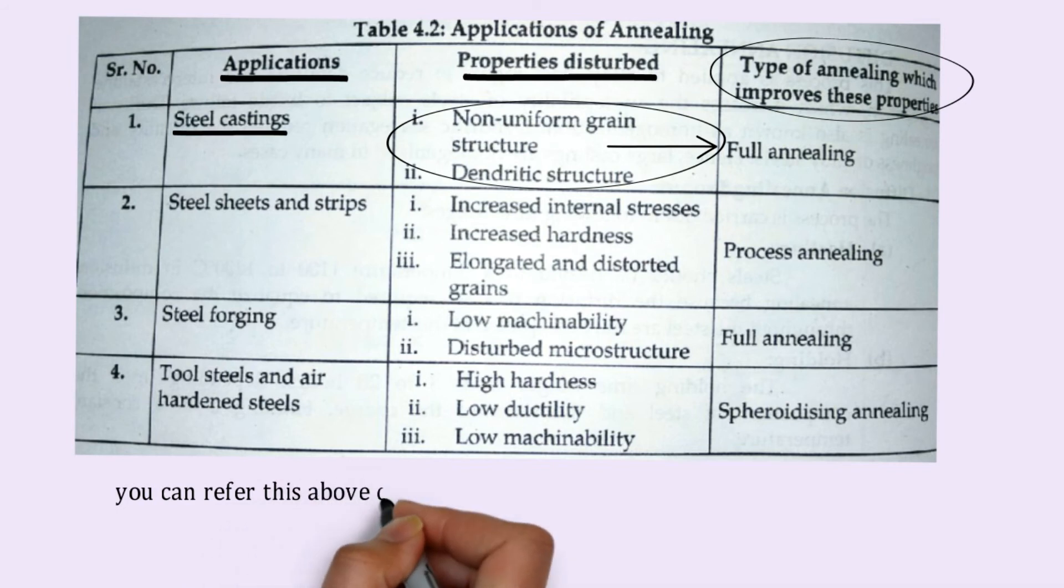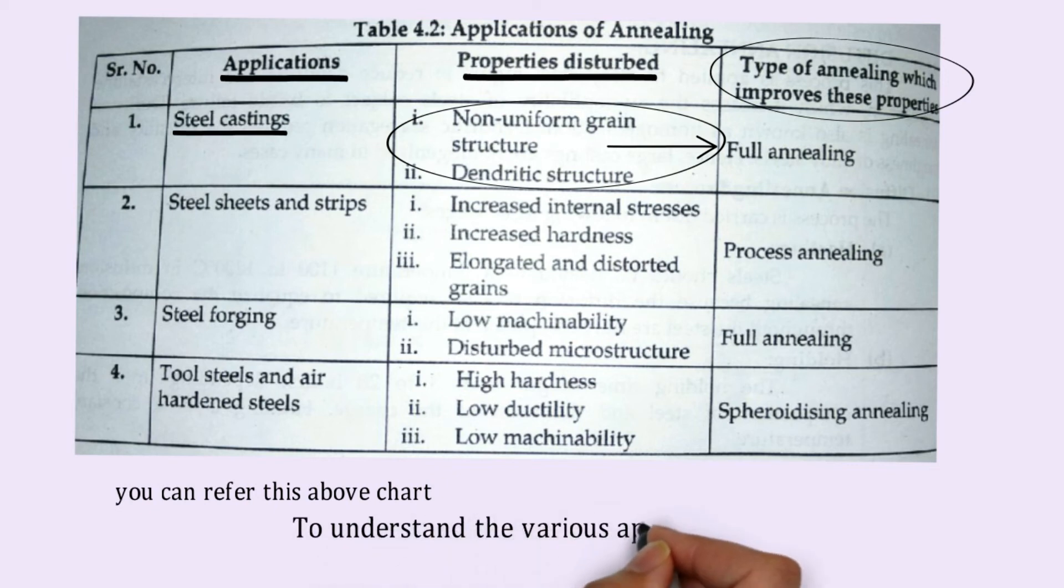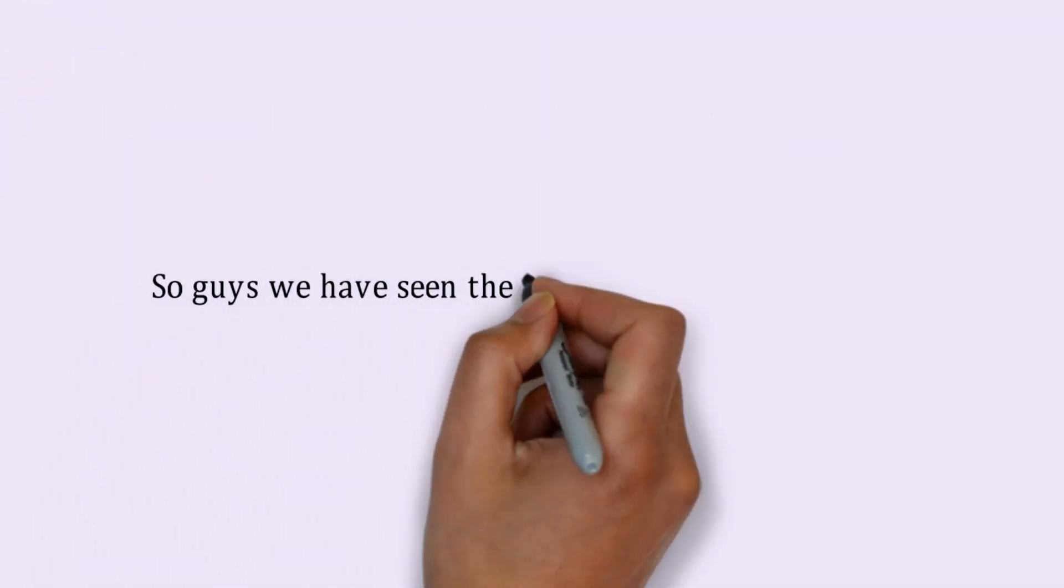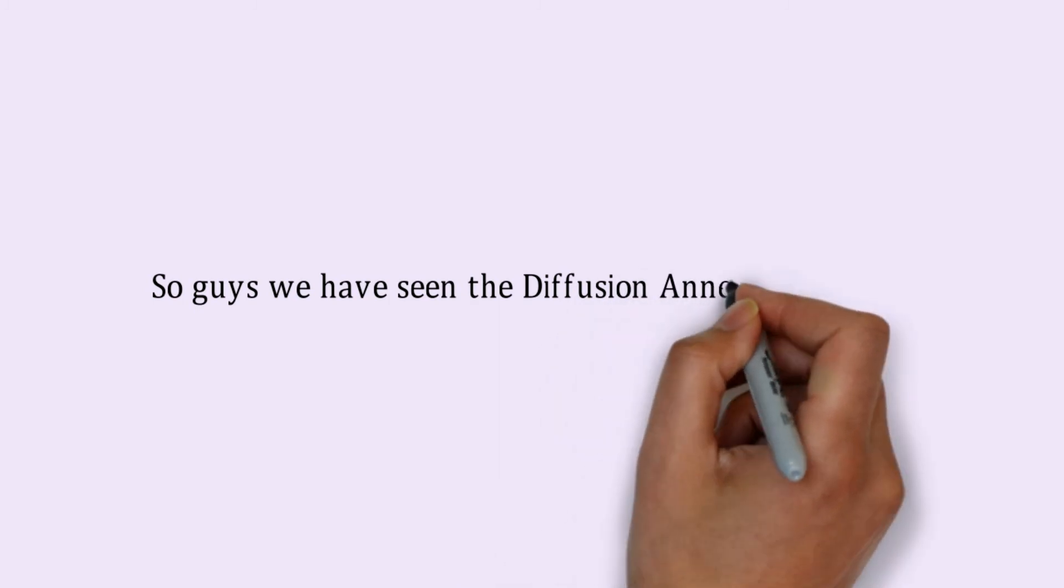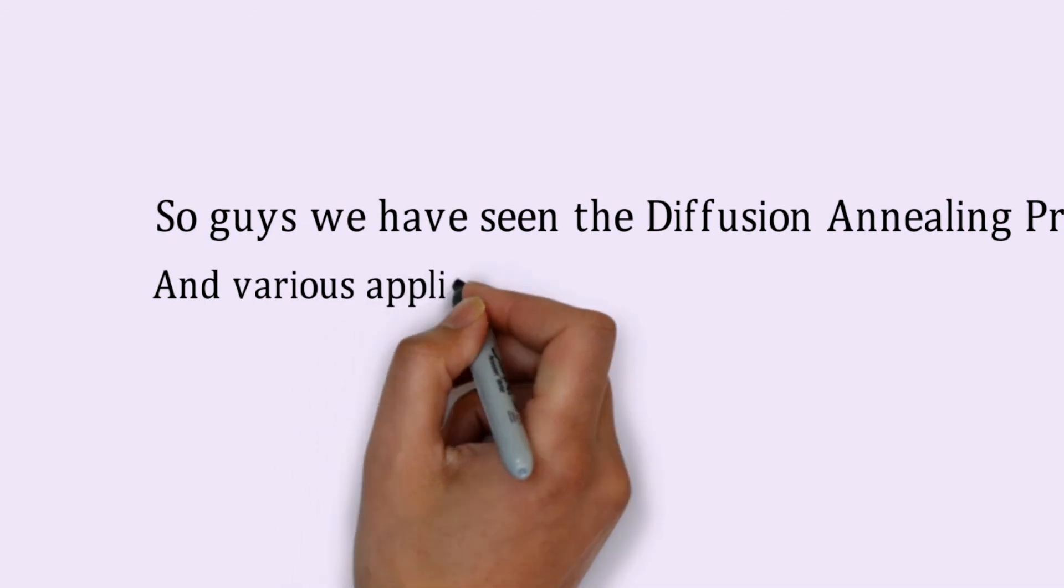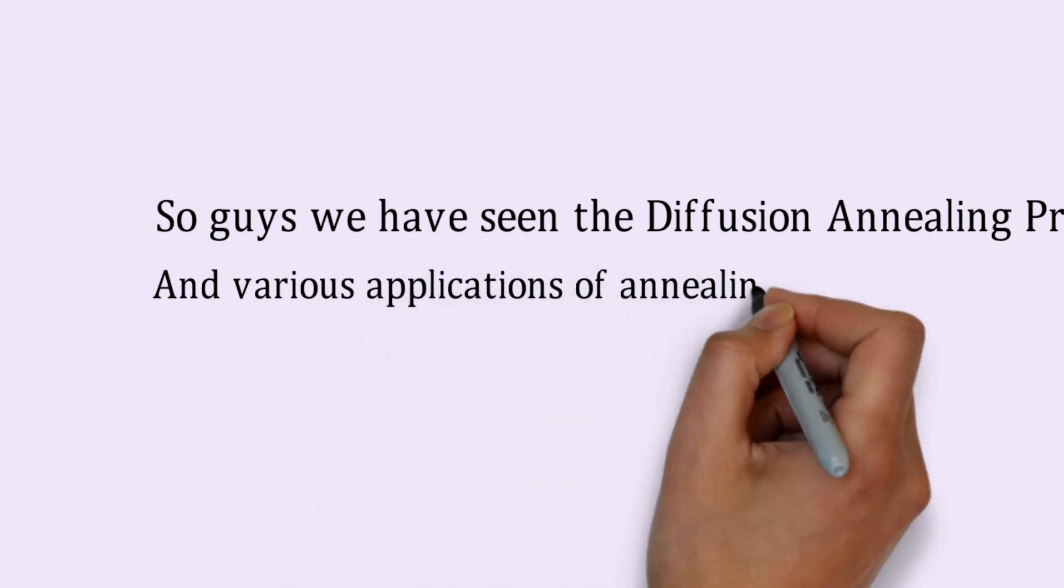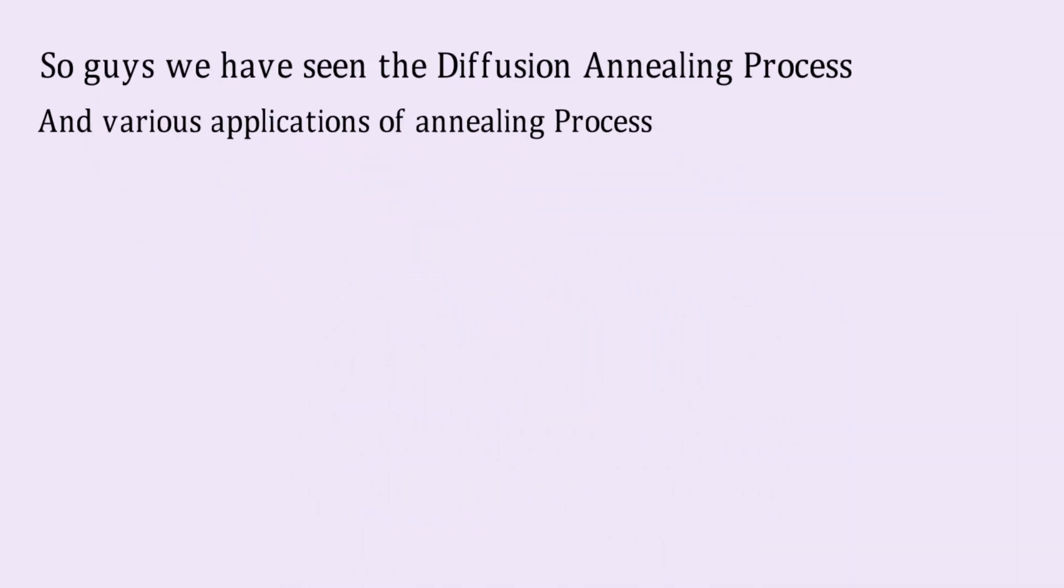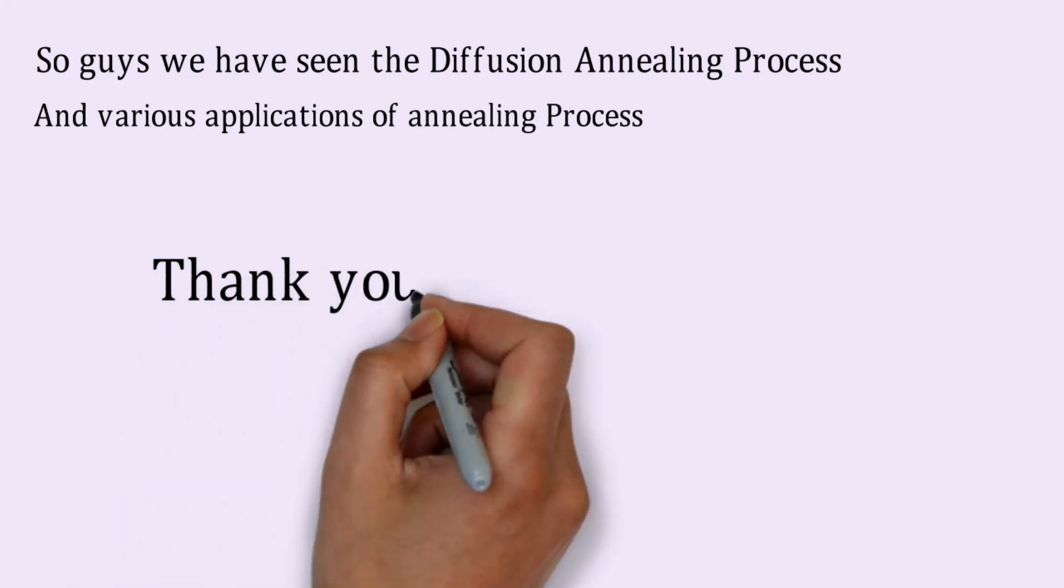You can refer to this chart and understand the various applications of annealing. We have learned the process of diffusion annealing, the three stages in the diffusion annealing process, and the applications of various annealing processes. So we have completed annealing.